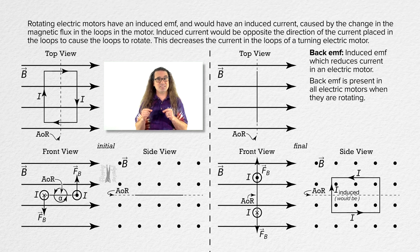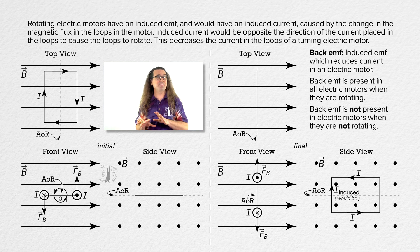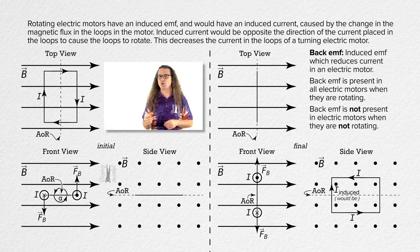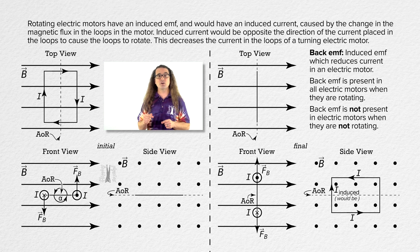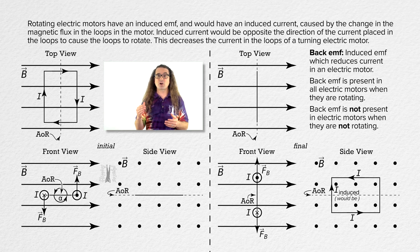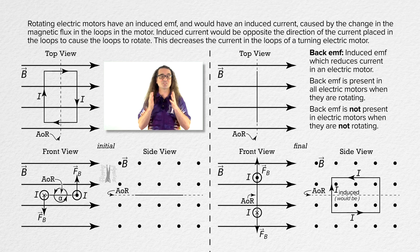Back EMF is present in all electric motors when they are rotating. Realize this back EMF is not present when the electric motor is not rotating, and the back EMF is lower when the motor is rotating at slower speeds. In other words, when an electric motor is first starting up, the current through the electric motor is larger than when the electric motor is turning at a constant angular velocity. This smaller back EMF, when an electric motor is just starting to rotate, can cause lights which are on the same circuit as the electric motor to dim when an electric motor is first starting up.